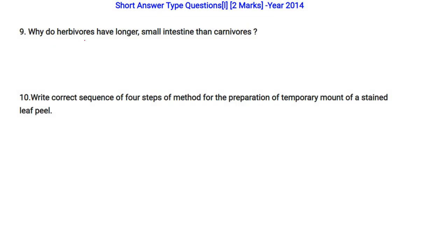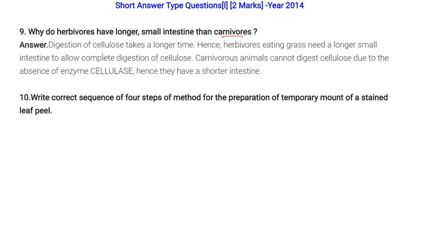Why do herbivores have a longer small intestine than carnivores? Herbivores eat grass and vegetables, and digestion of cellulose takes a longer time. They need a longer intestine to allow complete digestion of cellulose. Carnivores cannot digest cellulose due to the absence of the enzyme cellulase, so they have a shorter intestine.